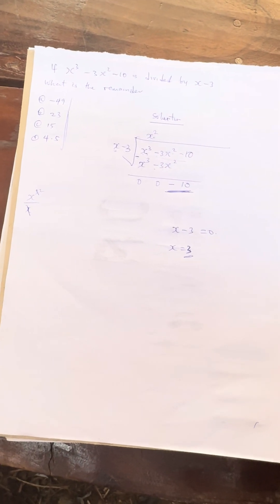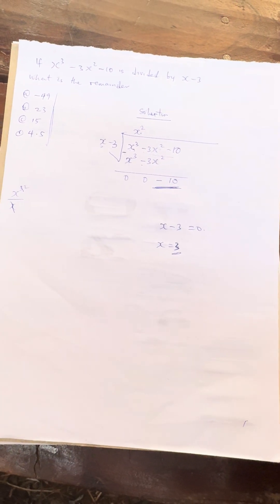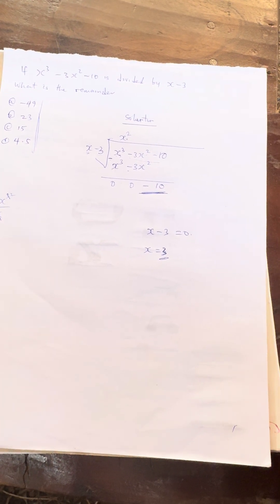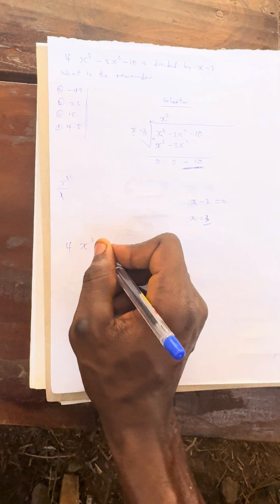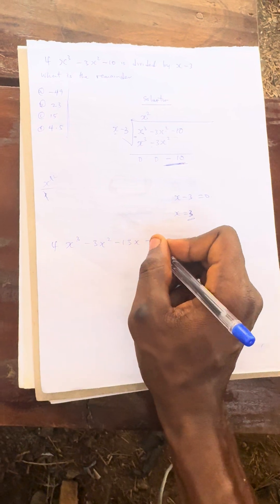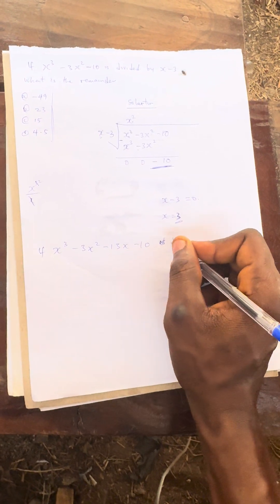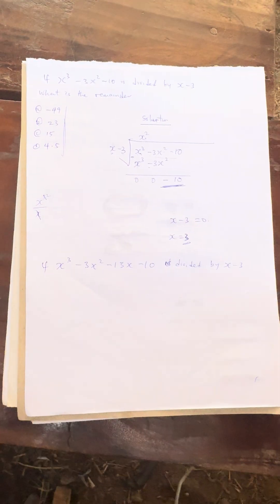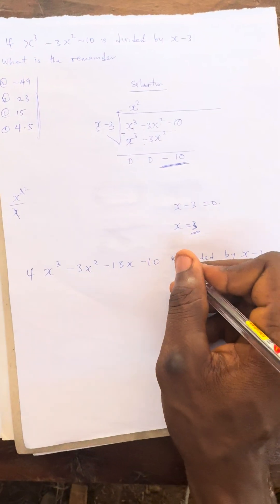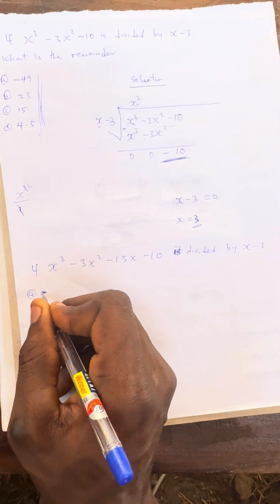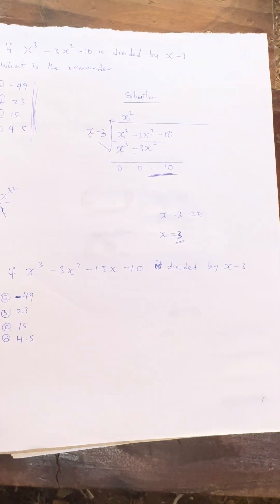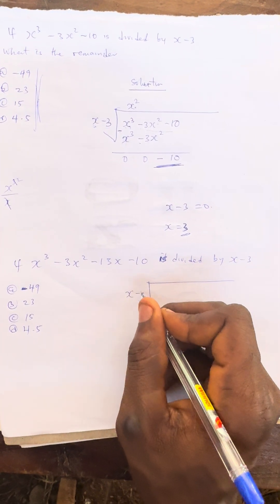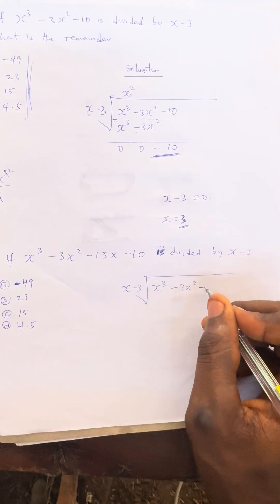That is how you calculate questions in this format. Now, so that you can know you are correct, let me bring a similar question. The question says: if x cubed minus 3x squared minus 13x minus 10 is divided by x minus 3, find the remainder. The options are: Option A: minus 49, Option B: 23, Option C: 15, Option D: 4.5. We are using the same options here.